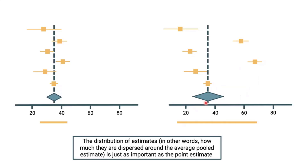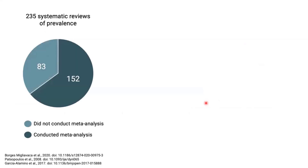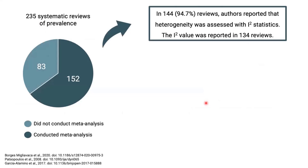Just as important as the point estimate, we need to assess heterogeneity in this type of study — especially because in meta-analysis of prevalence, we usually expect higher levels of heterogeneity than in meta-analysis of effects of interventions. So we wondered how reviewers were assessing heterogeneity in meta-analysis of prevalence. From a sample of 235 systematic reviews of prevalence, we identified 152 that conducted meta-analysis. In almost 95% of these reviews, authors reported that heterogeneity was assessed with the I² statistic.